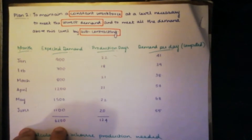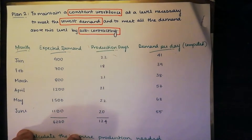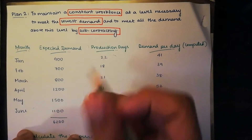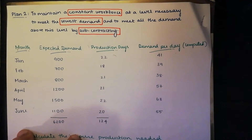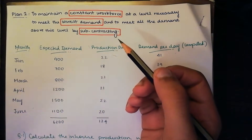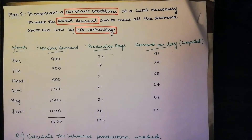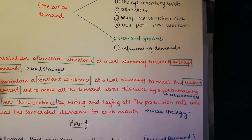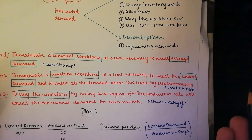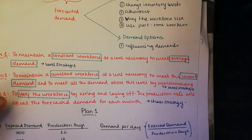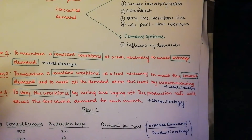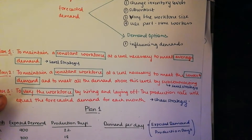So basically we are given a choice where we can produce the lowest demand within the company, and everything above this can be subcontracted and outsourced to other companies. In the previous plan, we had to have a constant workforce just to meet the average — we couldn't subcontract anything.